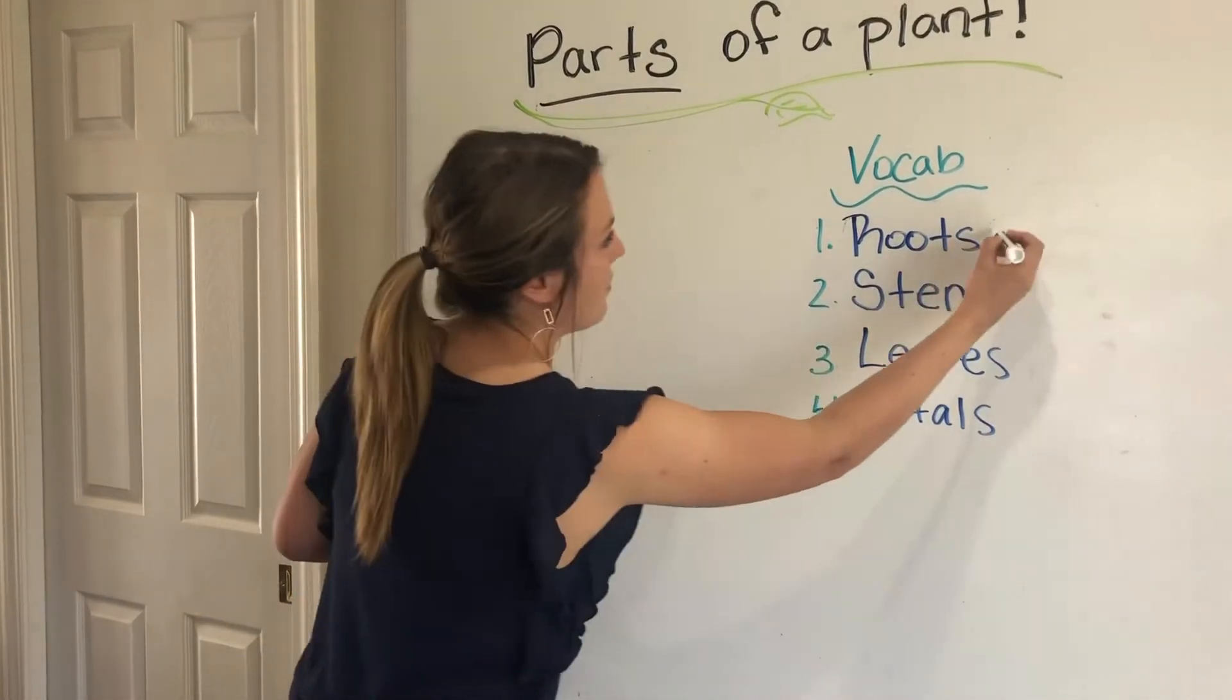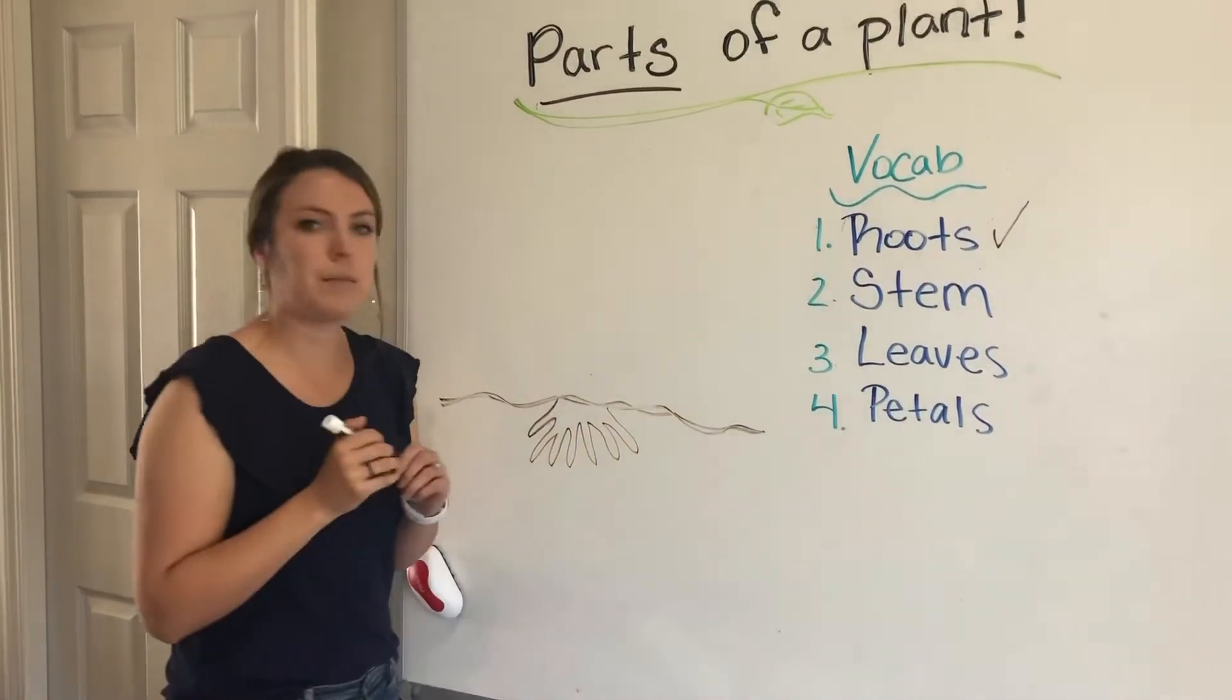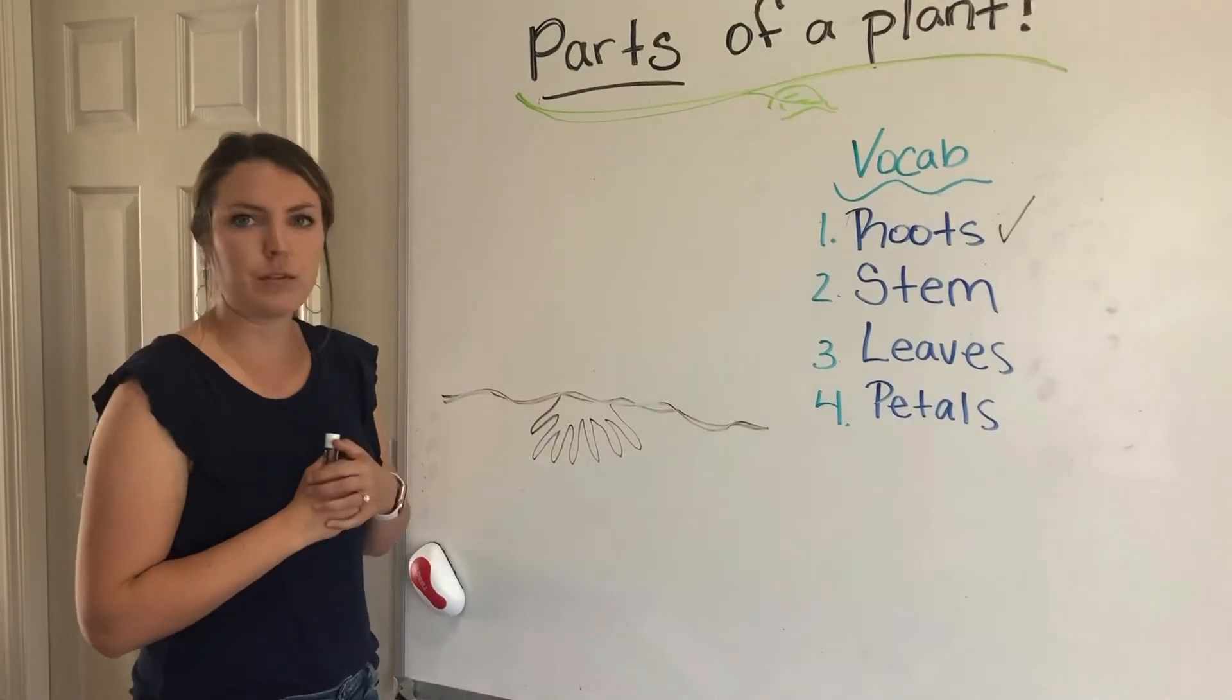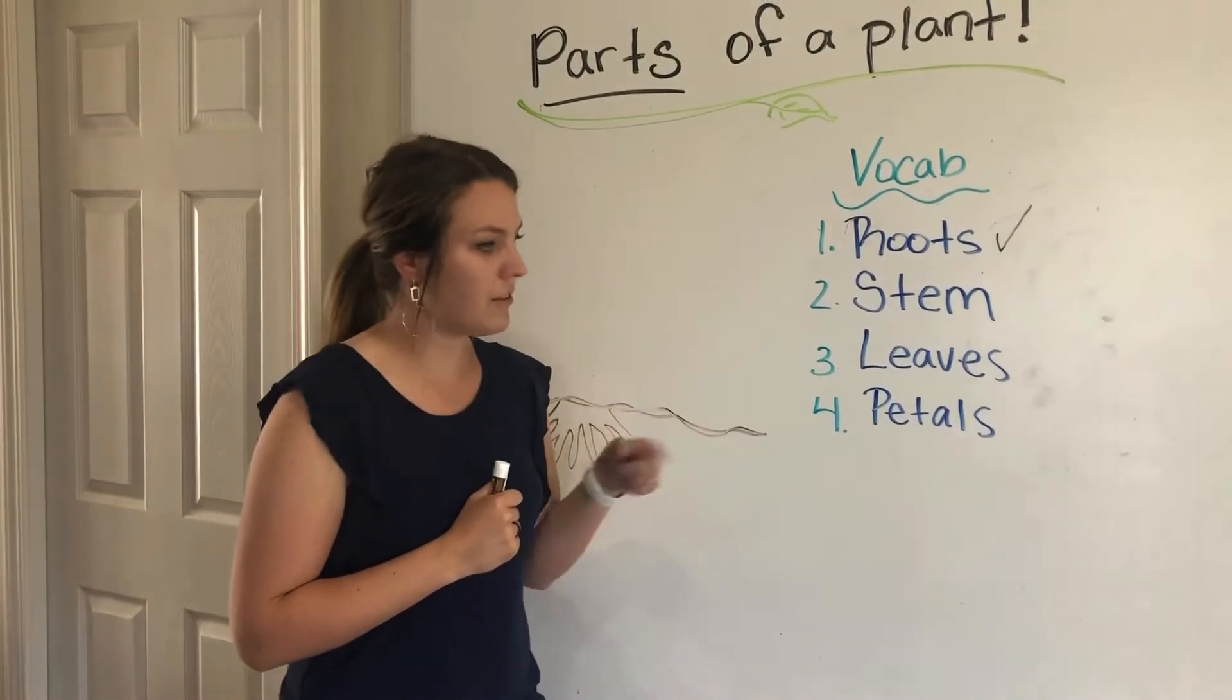So we have roots. Which one do you think comes next? Which one's gonna grow right from the roots? The stem, the leaves, or the petals?